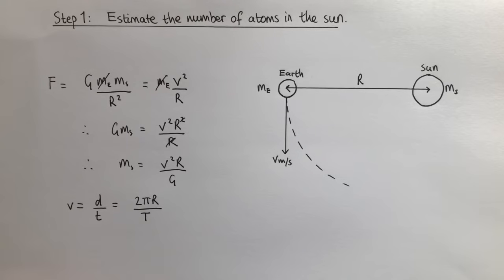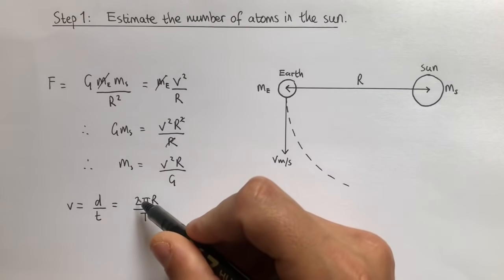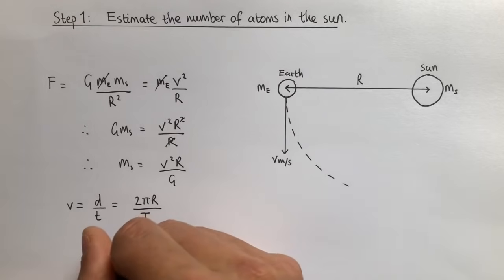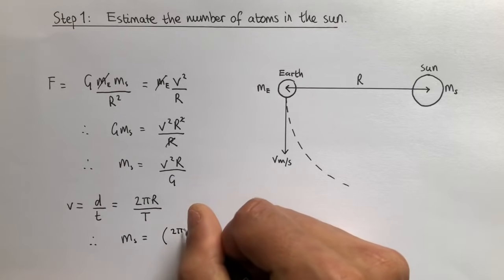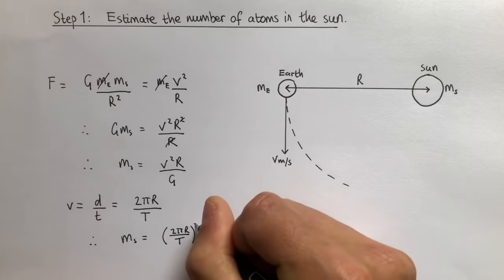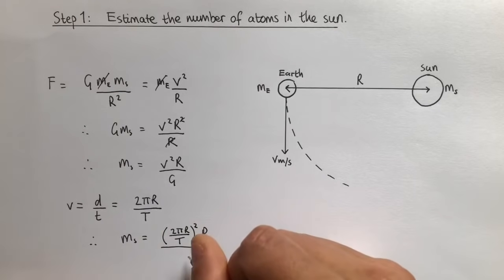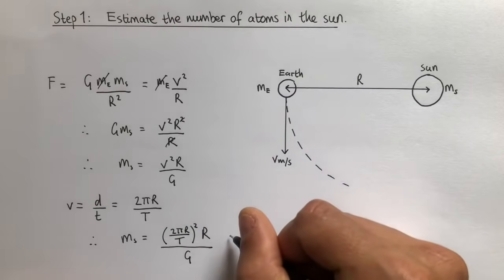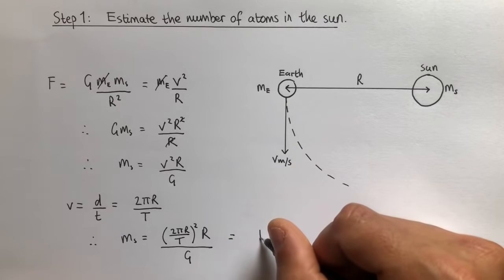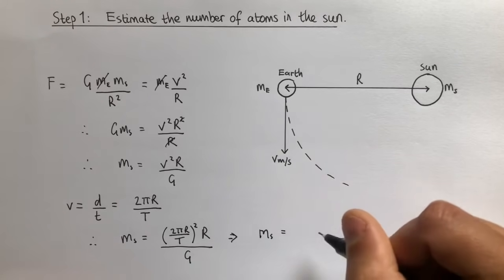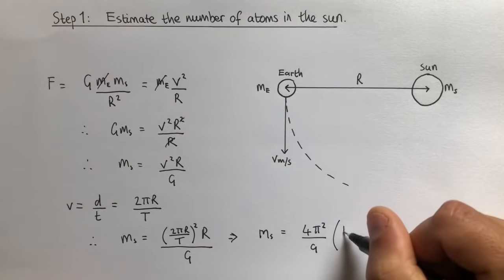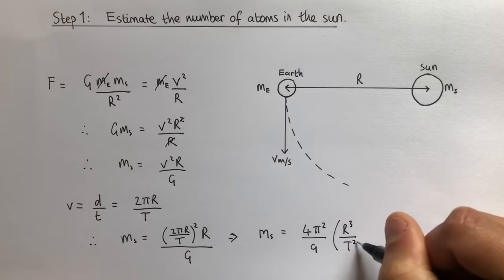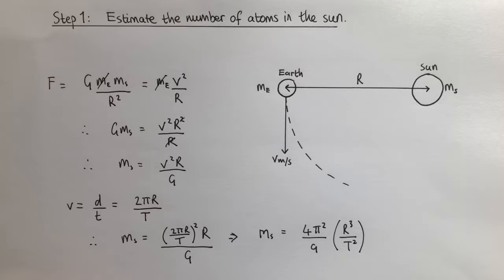So now we have an expression for V, which is 2πR divided by T, and we can substitute this into the equation. Therefore we can write MS equals — instead of V I write 2πR divided by T — and that's squared times R divided by G. We can simplify this expression and find that the mass of the Sun is equal to 4π² divided by G, times R cubed over T squared. And this is simply Kepler's third law.